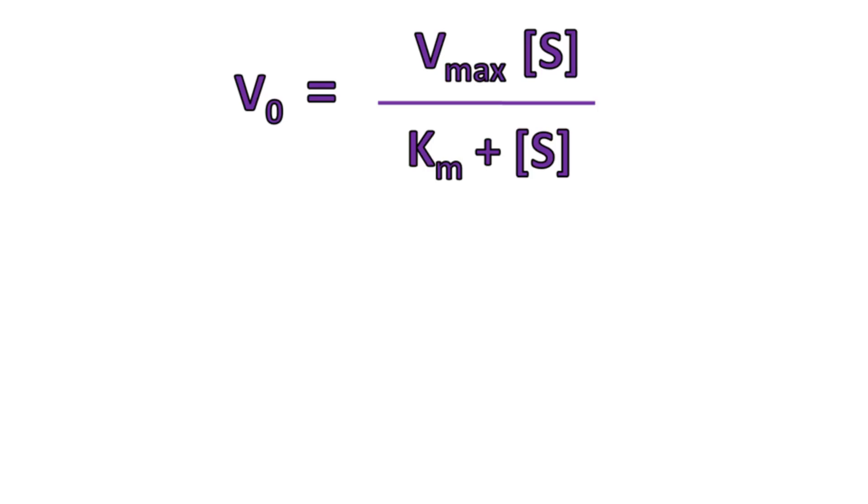According to Michaelis-Menten equation, V0 is equal to Vmax into S upon Km plus S.